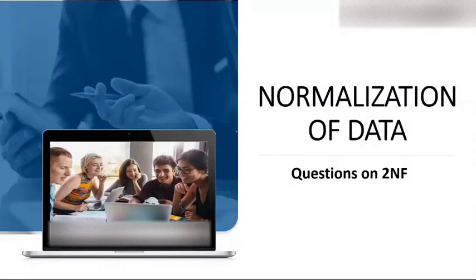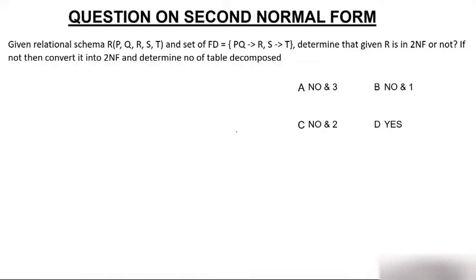Today the topic of discussion is normalization of data and we are going to study questions on 2NF. Prior to this video we discussed what second normal form is, and today we will solve different questions on 2NF. Given a relation schema R and set of functional dependencies, determine whether the given R is in 2NF or not. If not, convert it into 2NF and determine the number of tables decomposed.